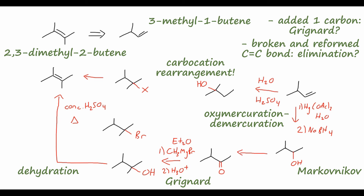Finally, to convert this alcohol to the ketone, we use pyridinium chlorochromate in dichloromethane — or a Jones oxidation using sodium or potassium dichromate in sulfuric acid and water — to give us the ketone. With that, we finish up the intermediate retrosynthesis by approaching it from both sides: from the product and from the reactant.